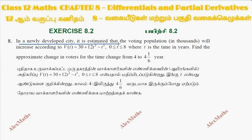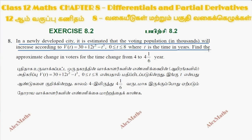In a newly developed city, it is estimated that the voting population will increase according to an equation. T lies from 0 to 8, where T is the time in years and V is the population in thousands. Find the approximate change in the voters — that is, the differential dV, where V is the number of voters.